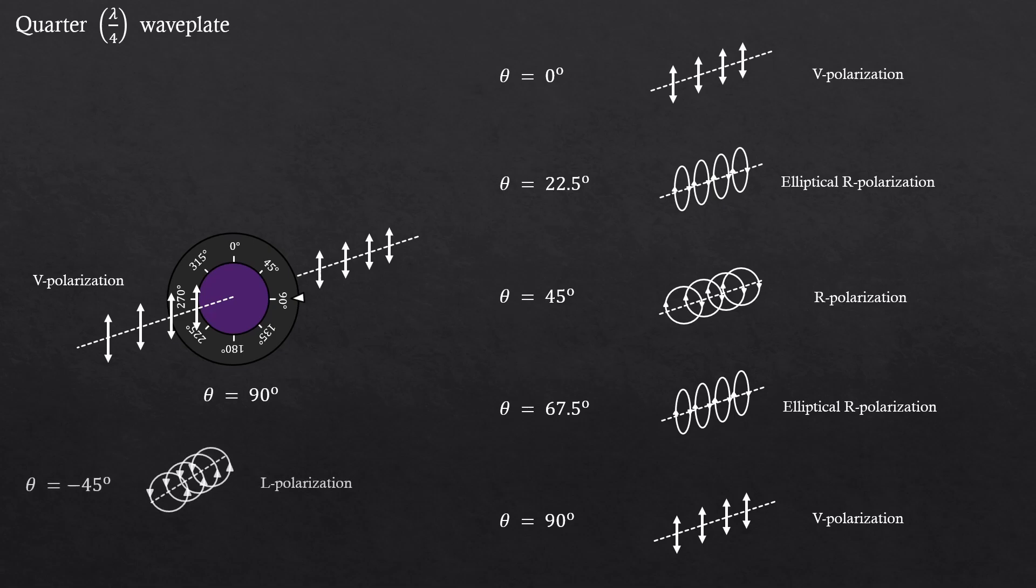Additionally, you could create left circular polarization by rotating the half wave plate 45 degrees the other way, in the counterclockwise direction. And as you can see, this time, we cannot create linear polarizations except itself, the vertical one.